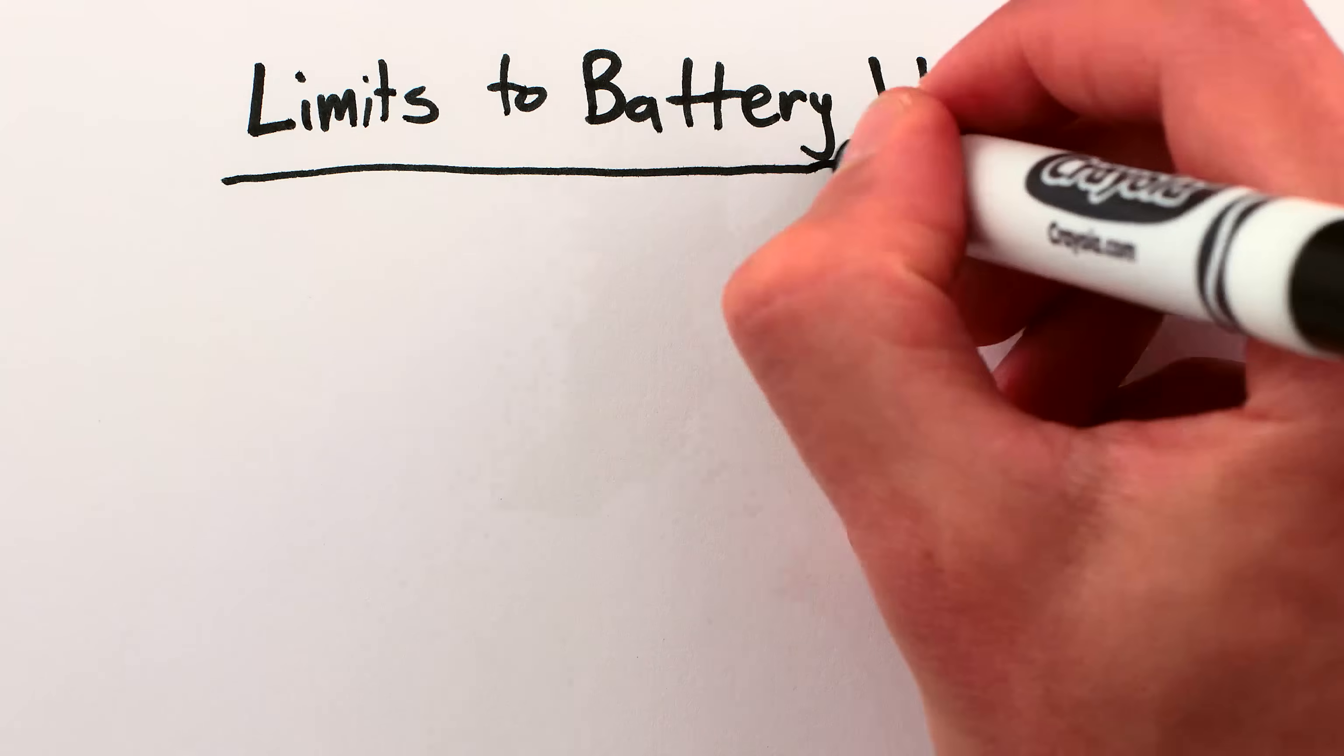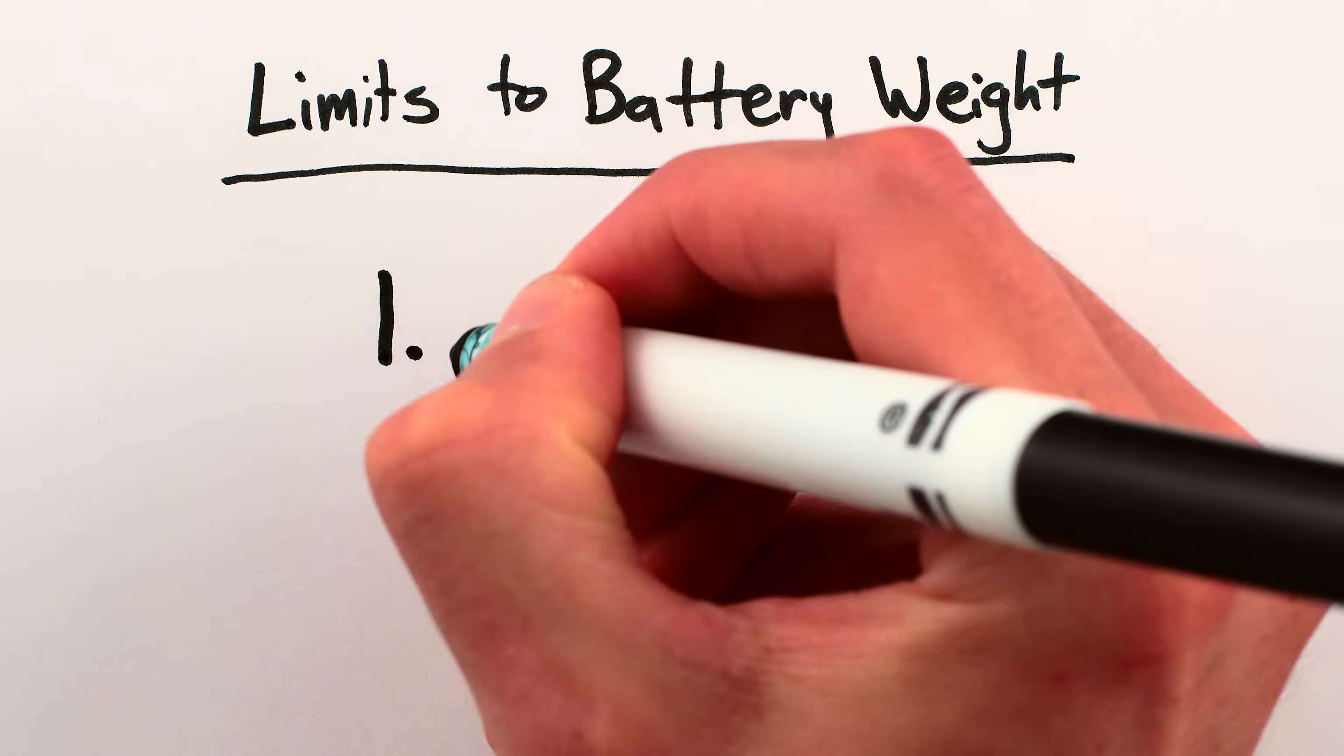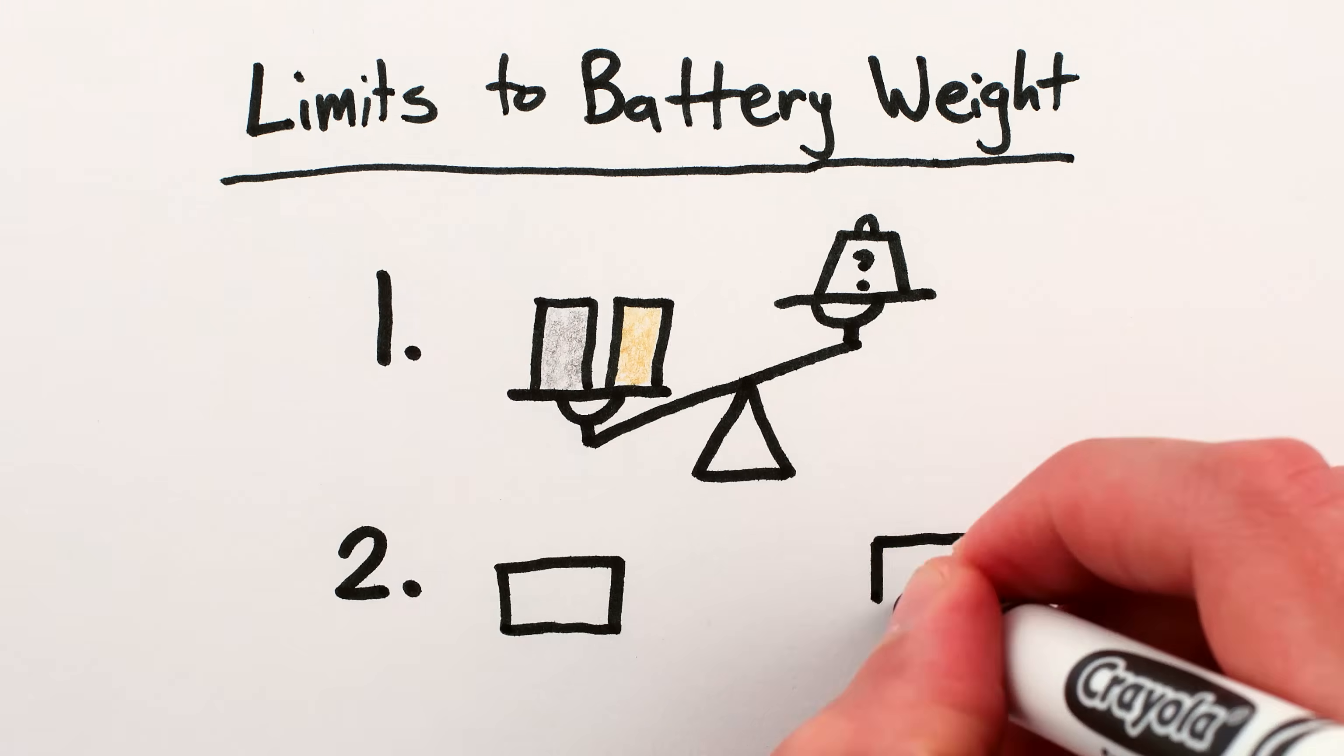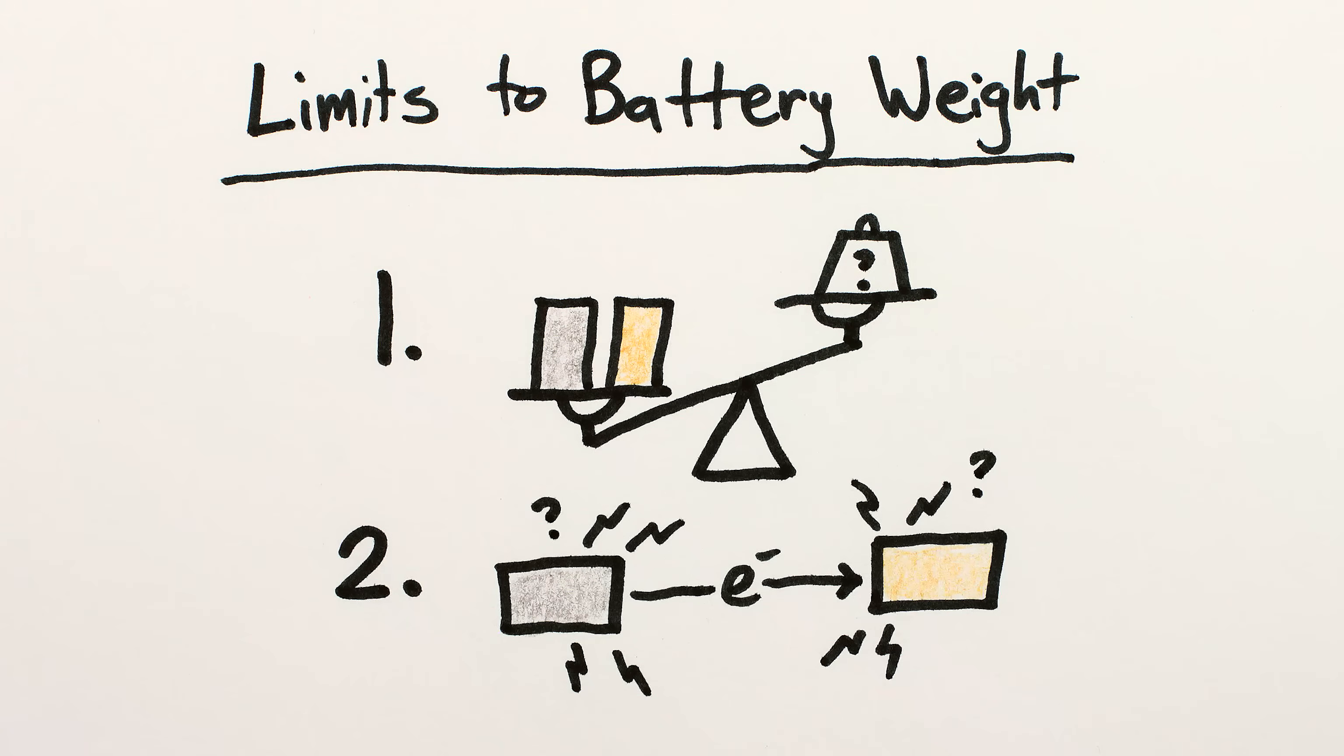The intrinsic limits to how lightweight batteries can be are imposed by two factors – the weight of the materials you use, and how much energy they give off per electron traded. So you want the lightest materials that produce the most energy per electron.